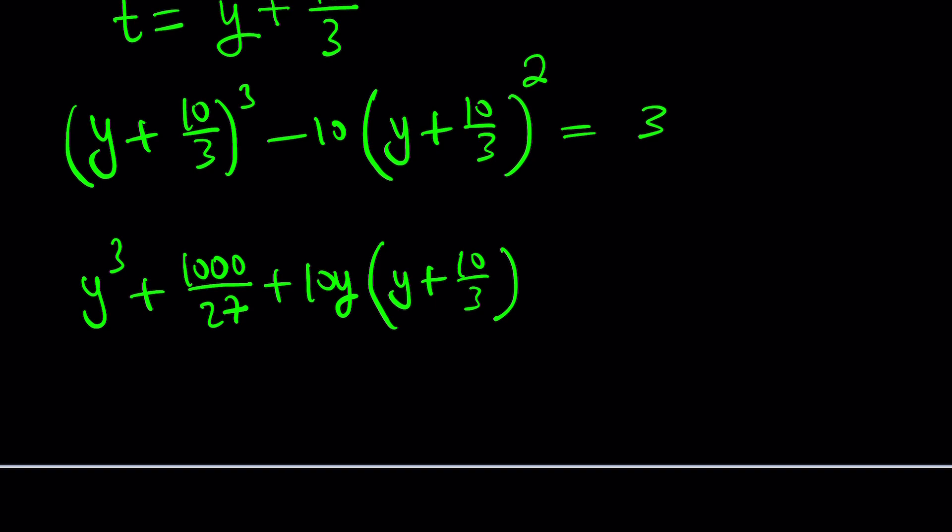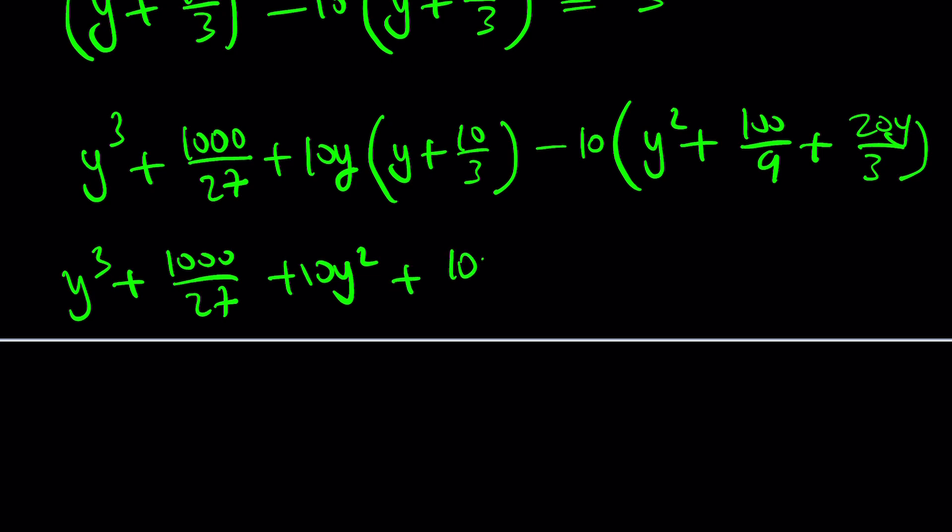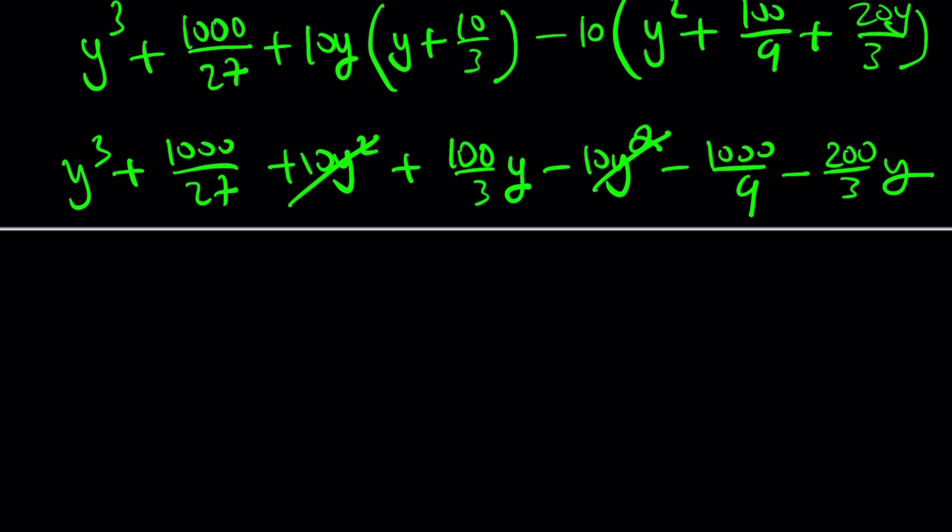But let's get rid of the y squared first. This is going to allow us to do it. And then minus 10 times, you can just square this with the formula. Remember it: a squared plus 2ab plus b squared. This will be 20y over 3, and the whole thing is equal to 3 of course. Let's go ahead and distribute everything. y cubed plus 1000 over 27 plus 10y squared plus 100 over 3y minus 10y squared. y squared cancels out. Nice. That was expected, right? 1000 over 9 minus 200 over 3 multiplied by y. It's probably better to write it that way so we get to see that it's the coefficient of y.